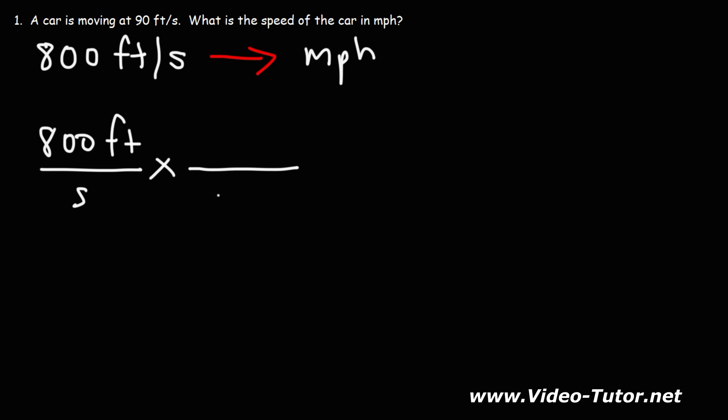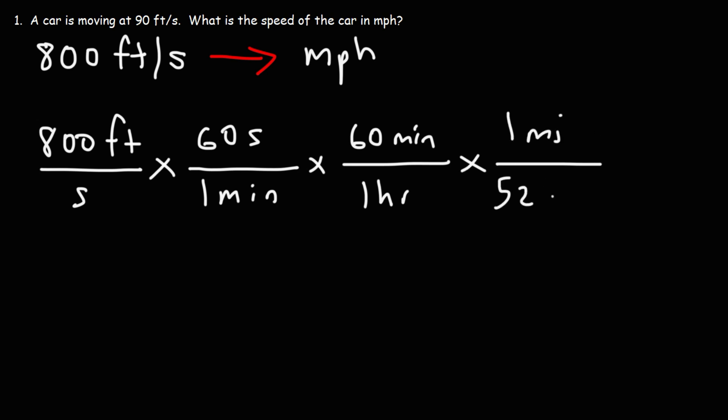So let's convert seconds to minutes to hours first. Let's do it a little bit different than before. So there's 60 seconds in a minute, and there's 60 minutes in an hour. And one mile is equivalent to 5,280 feet.